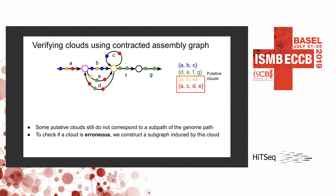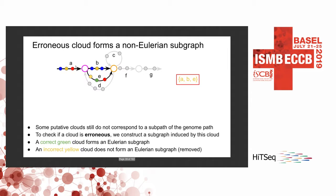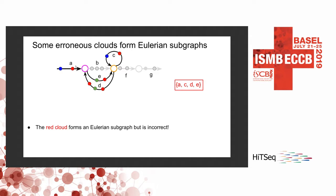We can check if a cloud is erroneous using the structure of the contracted assembly graph. A correct cloud corresponds to a subpath in the genomic path, so if we construct a subgraph induced by the edges of that cloud — for example, the edges of the green cloud — the subpath of the genomic path corresponding to that cloud traverses an Eulerian path in the subgraph. So if a cloud forms an Eulerian subgraph in the contracted graph, it may be correct. If a cloud doesn't form an Eulerian subgraph, we remove it because it doesn't correspond to any subpath of the genomic path. However, some erroneous clouds can still form Eulerian subgraphs due to the complex structure of the contracted assembly graph, so the contracted graph information alone is not enough.